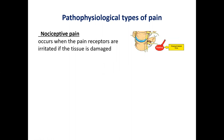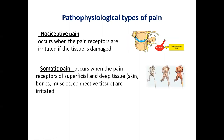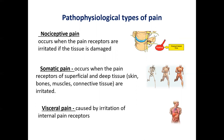Regarding the pathological types: the first is nociceptive pain, which occurs when pain receptors in damaged tissue are activated. Somatic pain occurs when receptors in superficial and deep tissues — skin, bones, muscles, connective tissue — are irritated. Visceral pain is caused by irritation of internal pain receptors located in internal organs, for example the pleura.